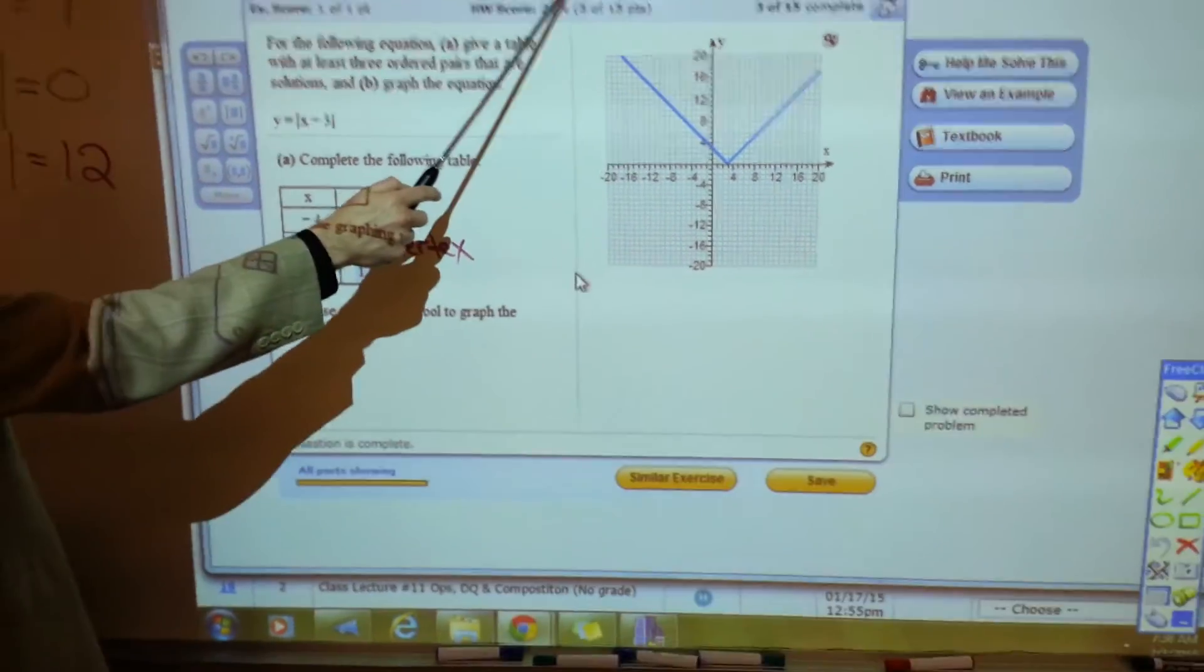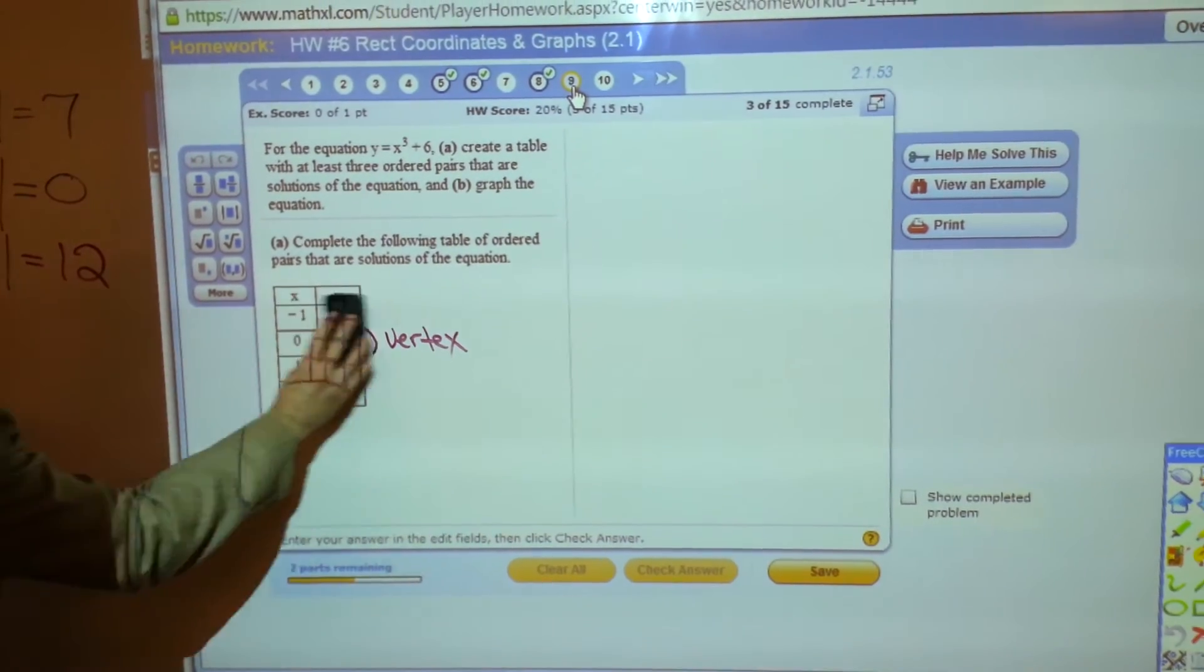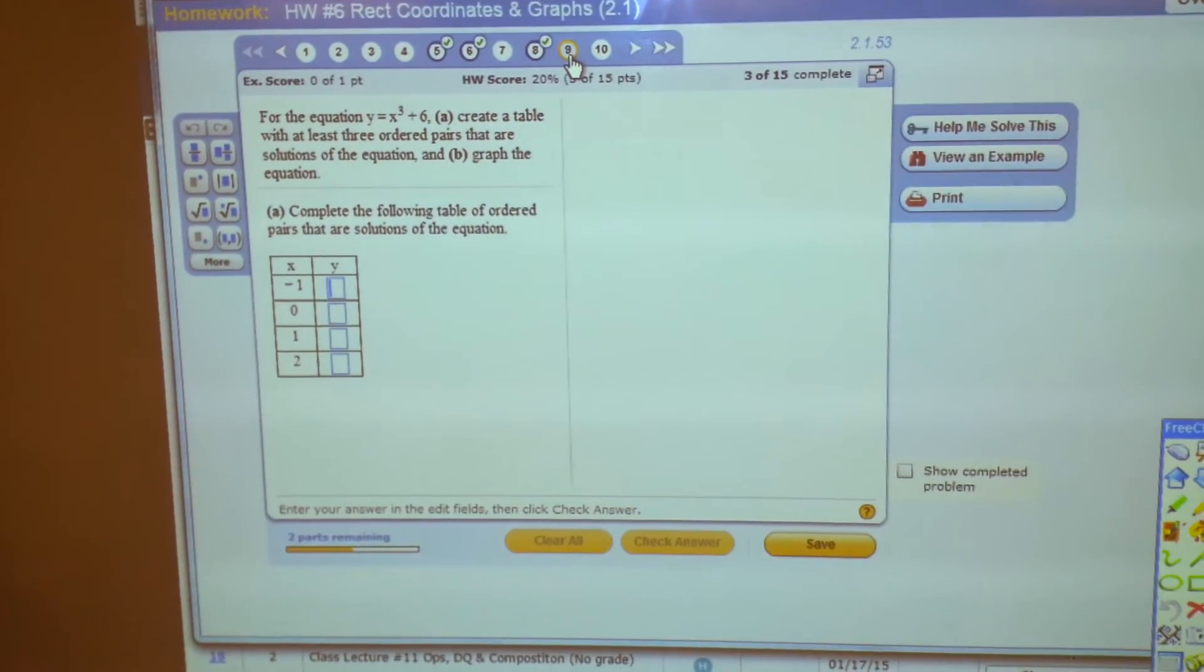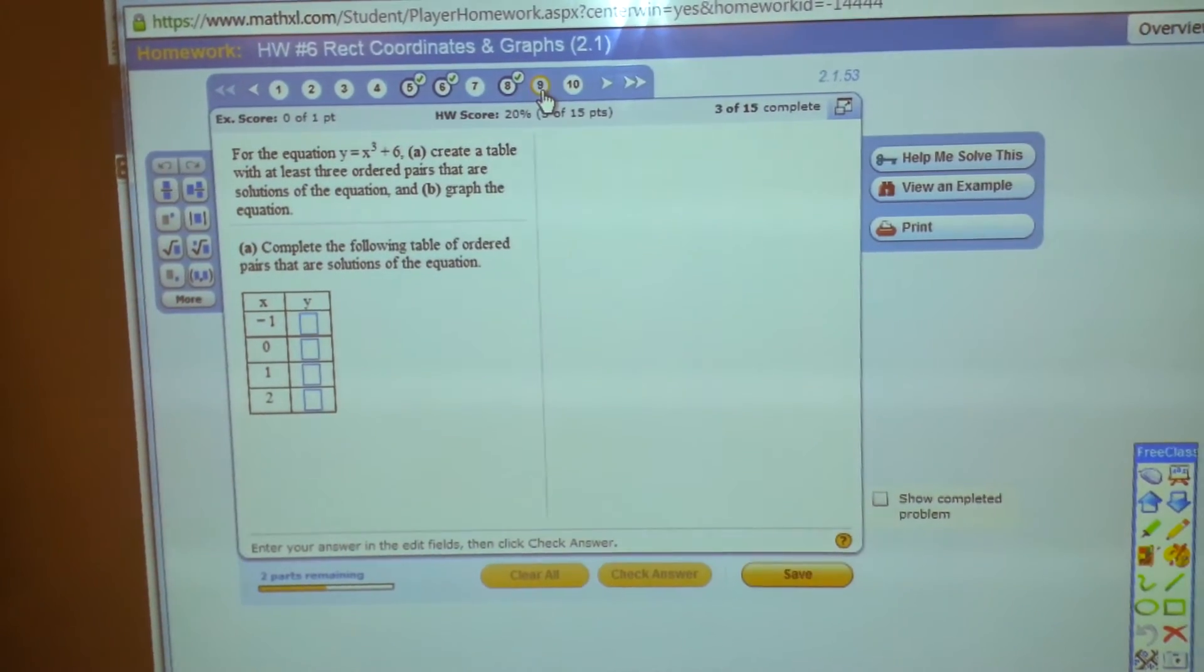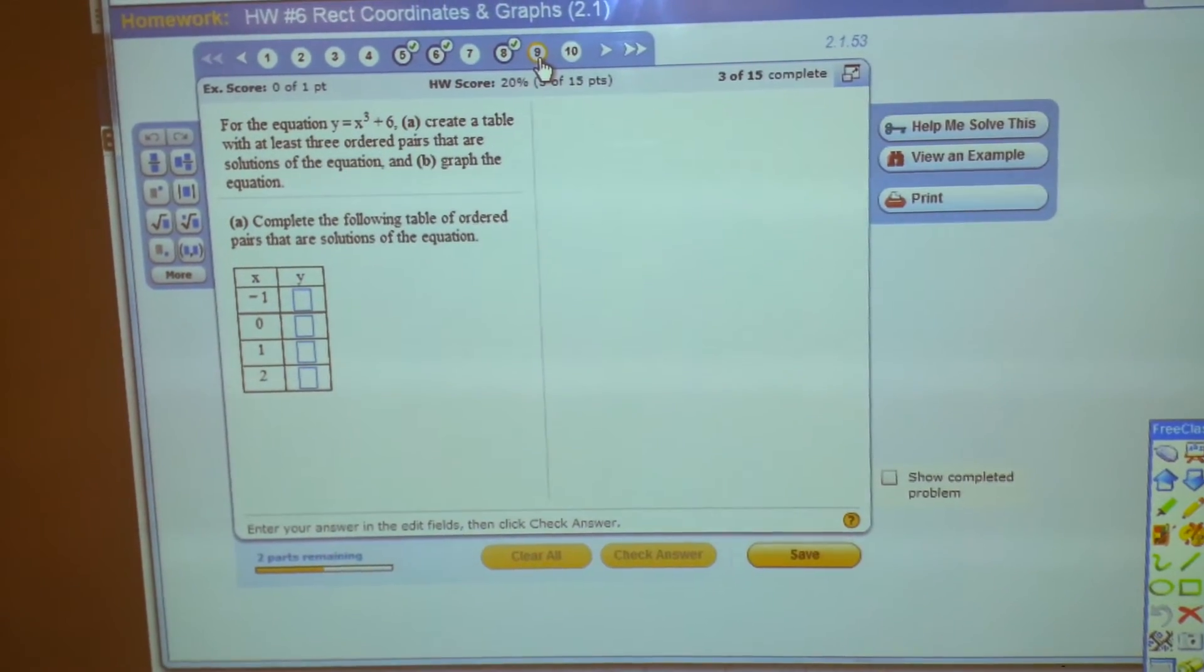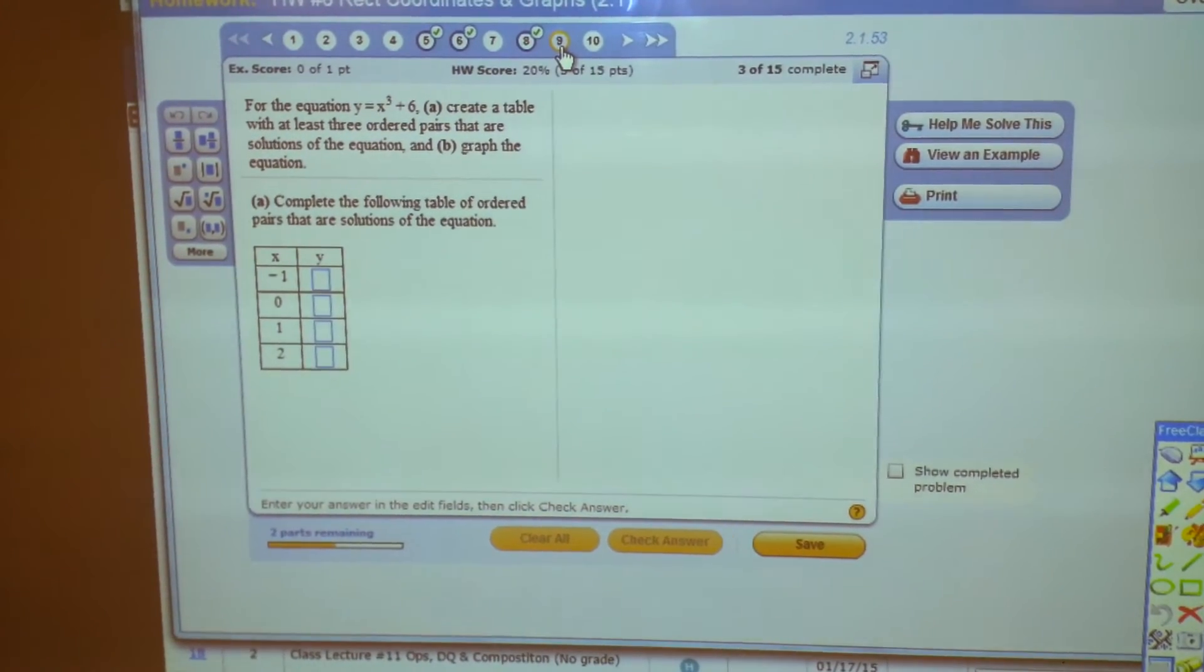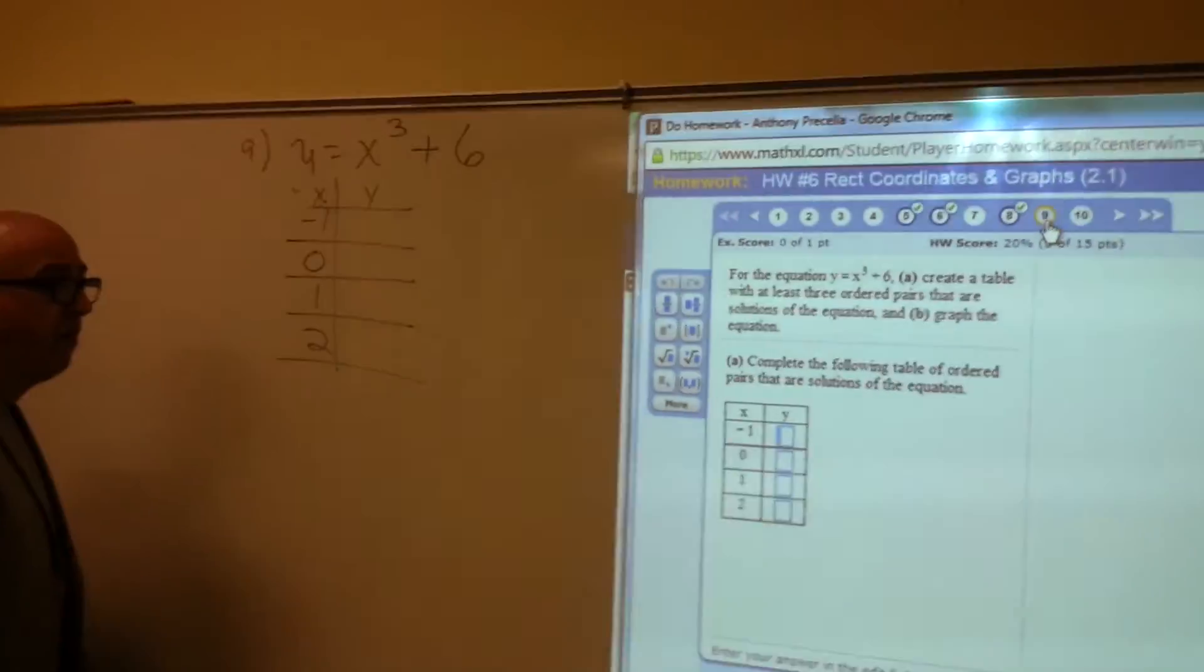Now one more to do. Number nine. This is the last graphing tool we have in this assignment. Y equals x cubed plus six. We have that table. Plug a negative one in. Plug a zero in. Plug a one in. Plug a two in. For x.